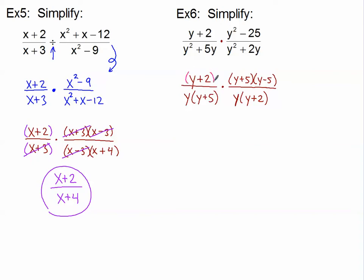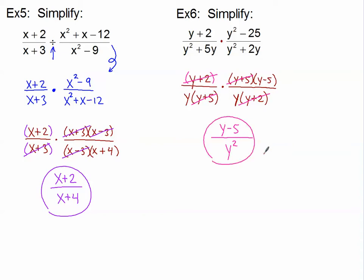Now let's cancel common factors. y plus 2 in the numerator cancels with y plus 2 in the denominator. y plus 5 cancels with y plus 5. y minus 5 has no match in the denominator — it stays. The two y's are both in the denominator, so we cannot cancel them with each other — you can only cancel one from the top with one from the bottom. The numerator is y minus 5, and the denominator is y times y, which is y squared. Answer: y minus 5 over y squared.